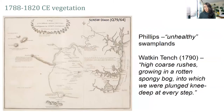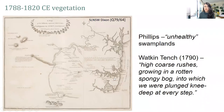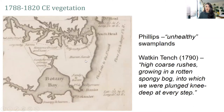Philip, the first governor of the colony of Sydney, described unhealthy swamplands within the Botany Bay region — which was in fact the reason the first British colony was moved from Botany Bay to its current location. Explorer Watkin Tench in the 1790s described the landscape as comprising high coarse rushes growing in a rotten spongy bog, into which we plunged knee-deep at every step. These descriptions, along with basic map annotations describing southern Sydney as barren sands, sandy and barren country, all give the impression of a very open landscape.